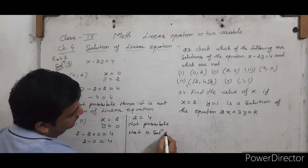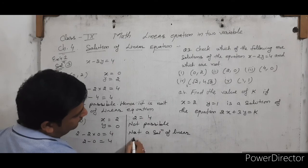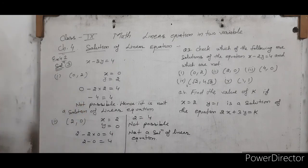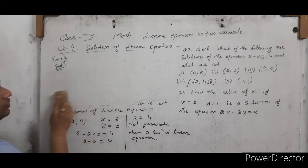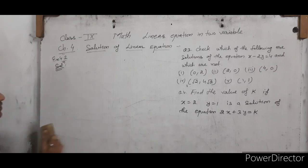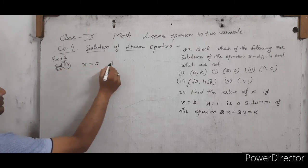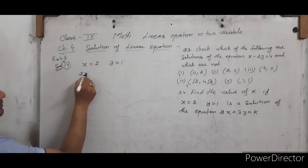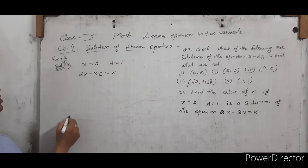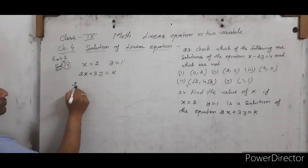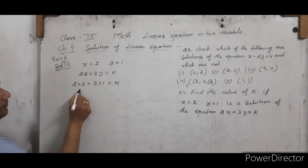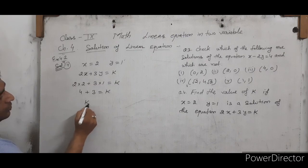By this method, you can check whether a given pair is a solution of the linear equation. The remaining three parts you can try yourself. Question 4: Find the value of k if X equals to 2 and Y equals to 1 is a solution of 2X plus 3Y equals to k. Substituting: 2 times 2 plus 3 times 1 equals to k, so 4 plus 3 equals to k, giving k equals to 7.